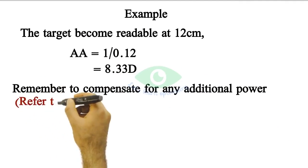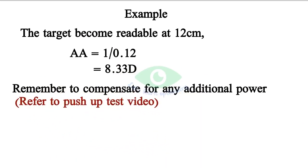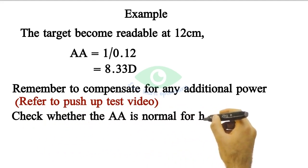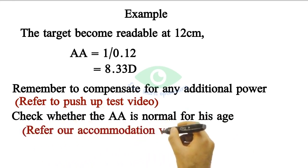Remember to compensate for any additional power added. Watch our push-up test video to know why to add additional power and how to compensate it. After calculating the amplitude of accommodation, check whether it is normal for his age. Watch our accommodation video to know how to find the normal amplitude for the age.